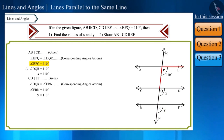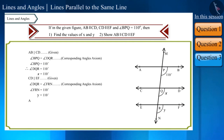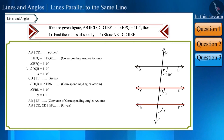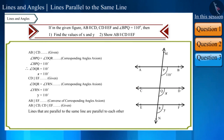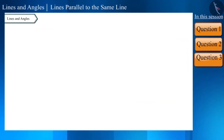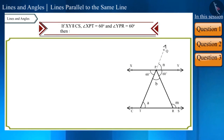Angle BPQ equals angle FRN and these are corresponding angles. Therefore, by the converse of the corresponding angles axiom, line AB and line EF are parallel to each other. We are also given that line AB is parallel to line CD and line CD is parallel to line EF. Since lines that are parallel to the same line are parallel to each other, we can use this theorem to confirm that all three lines are parallel to each other.